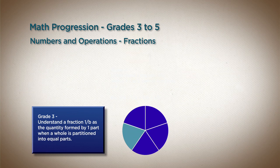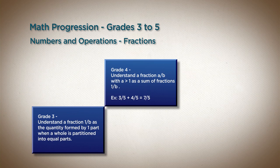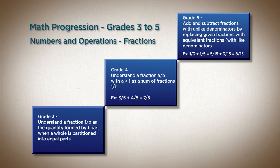You divide the unit interval into fifths, and you have one-fifth, two-fifths, three-fifths, four-fifths. Then you learn to add those. Three-fifths plus four-fifths is seven-fifths. In other words, fractions are really just an extension of the number system.